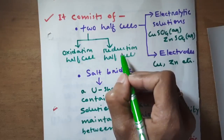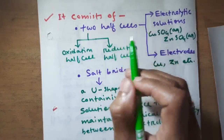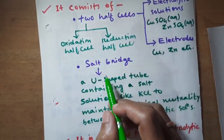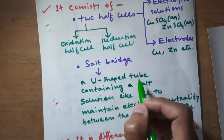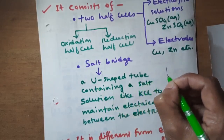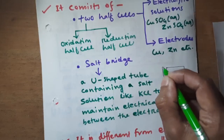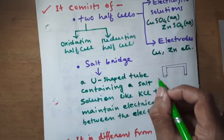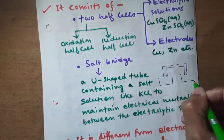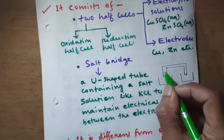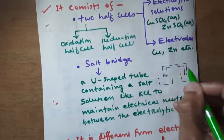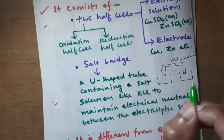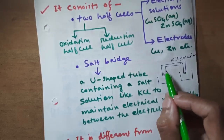An electrochemical cell consists of two half cells or redox couples. One of them is called the oxidation half cell and the other one is called the reduction half cell. The salt bridge connects the two half cells. This U-shaped tube acts like a bridge and contains a salt solution like KCl.